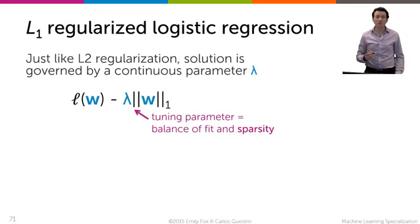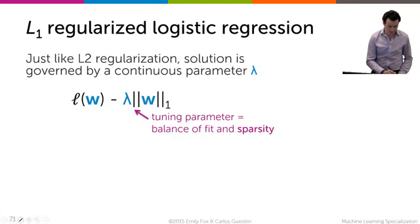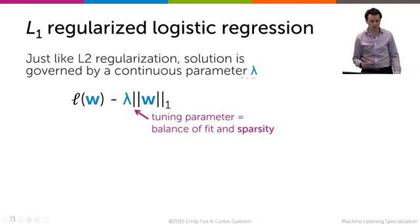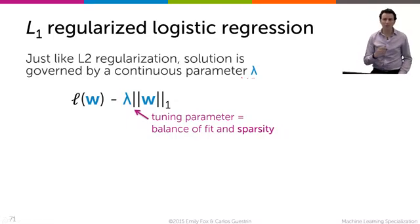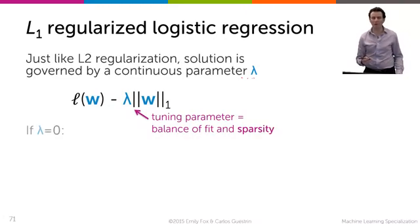Just like we did with L2 regularization, we're also going to have a parameter lambda which controls how much regularization we introduce, so how much penalty we introduce. And the objective becomes the log likelihood of the data minus lambda times the sum of absolute values, the L1 penalty.